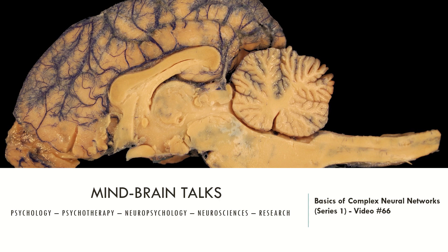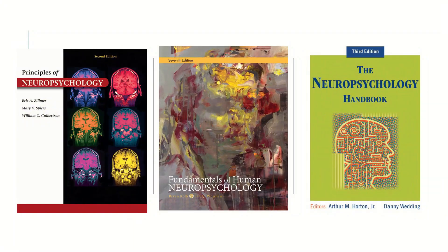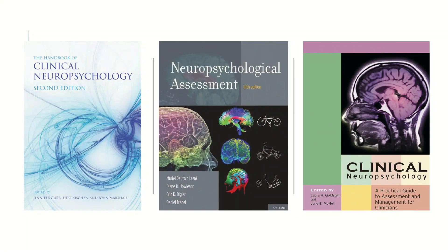But before we look at this, let's see the manuals that I recommend to you today. The first is Principles of Neuropsychology, the second is the seventh edition of Fundamentals of Human Neuropsychology, the third is the Neuropsychology Handbook, the fourth is the Handbook of Clinical Neuropsychology second edition, the fifth is the Neuropsychological Assessment by Wesak, and the sixth is Clinical Neuropsychology by Laura Gunstein and Jane McNeil.